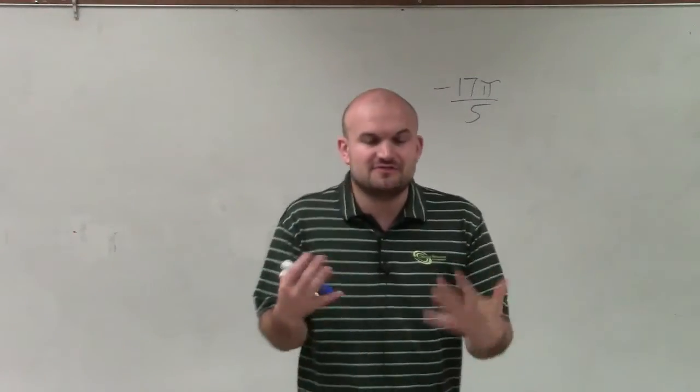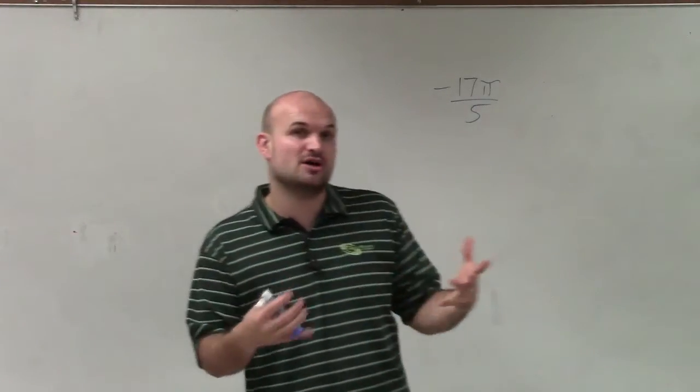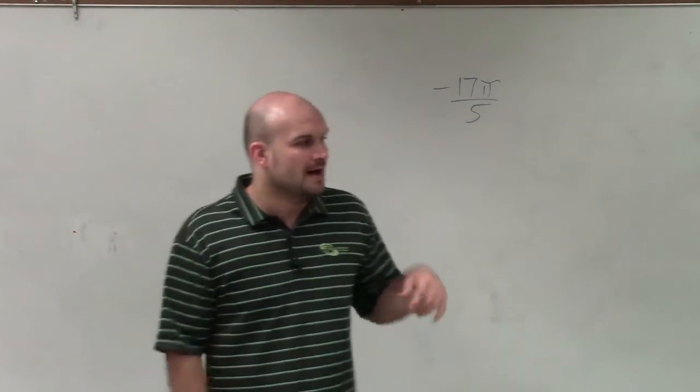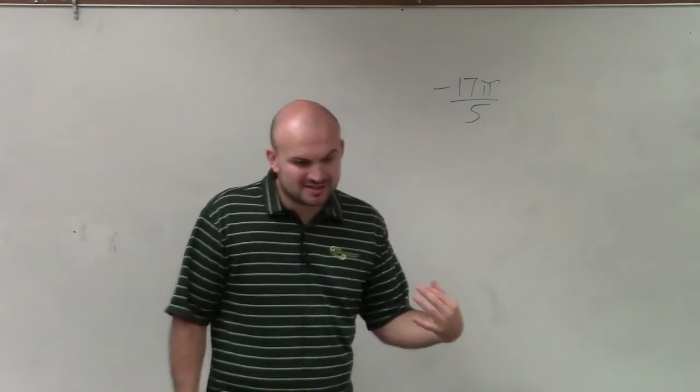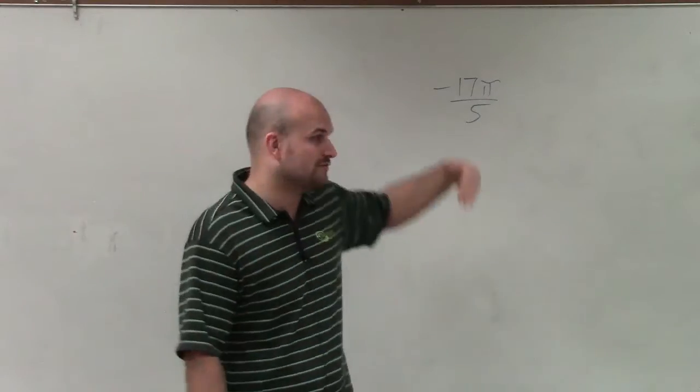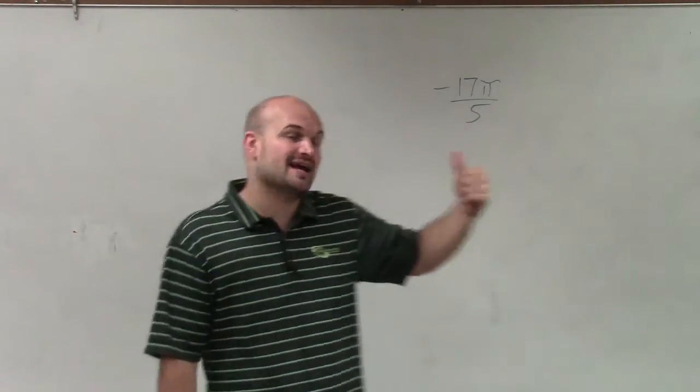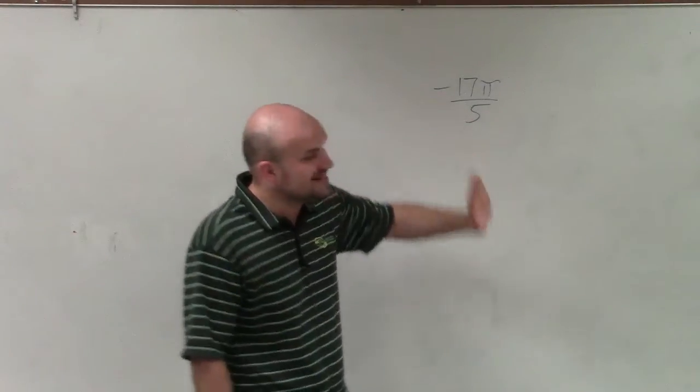So when I'm asking to find the smallest positive, the smallest negative coterminal angle, what I want to do first is be able to get this down to its smallest negative angle first. So if it's positive, I want to make sure it's the smallest positive. And if it's negative, I want to make sure it gets down to its smallest negative.